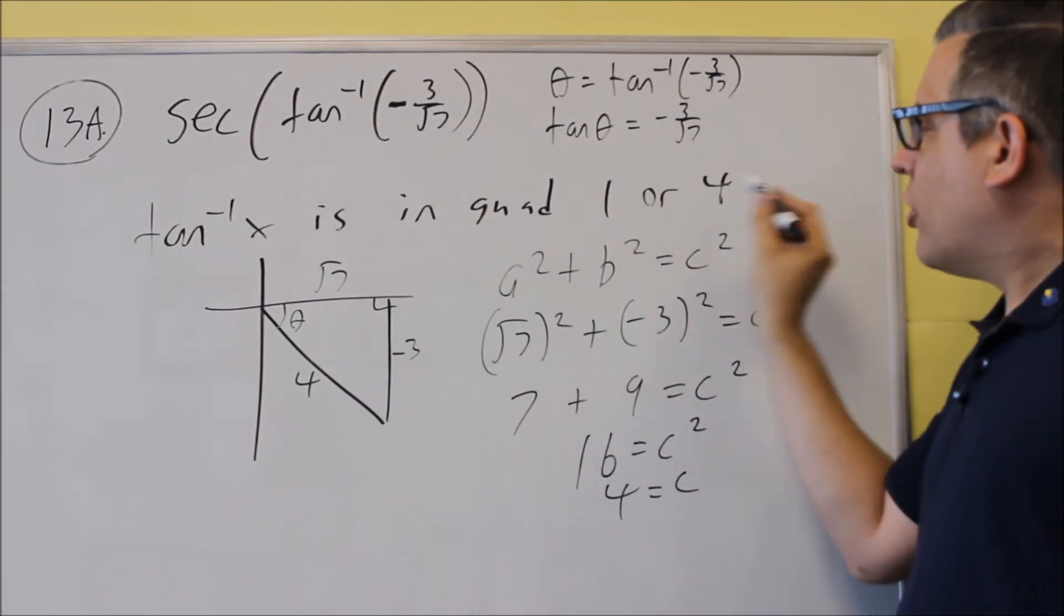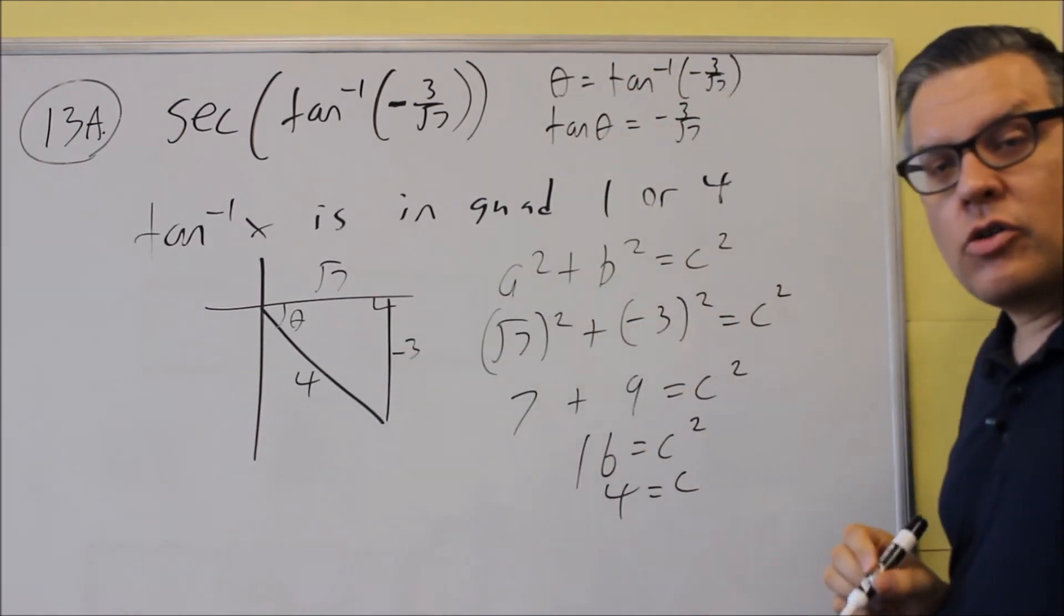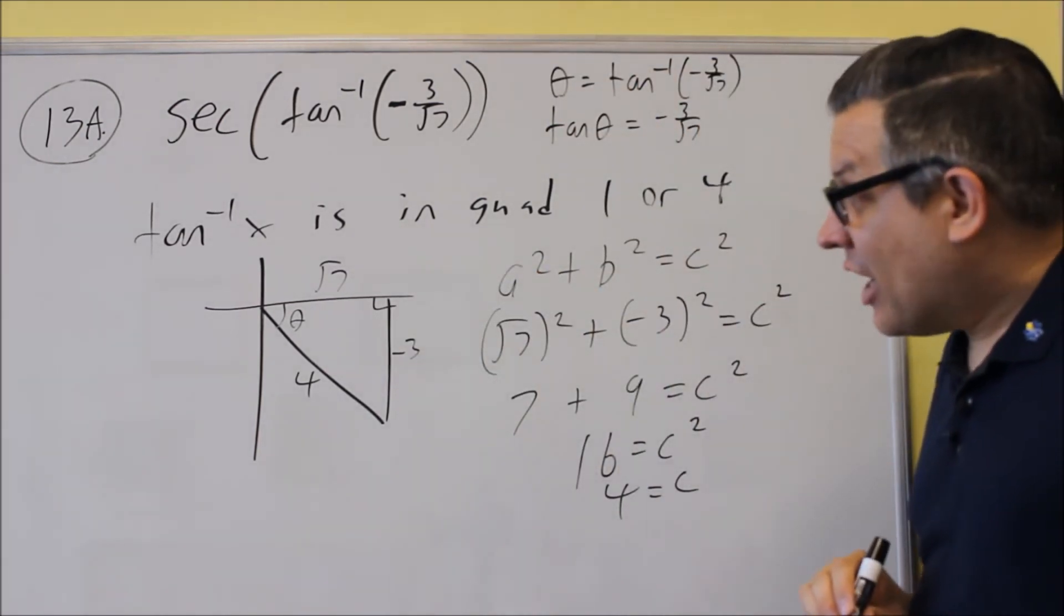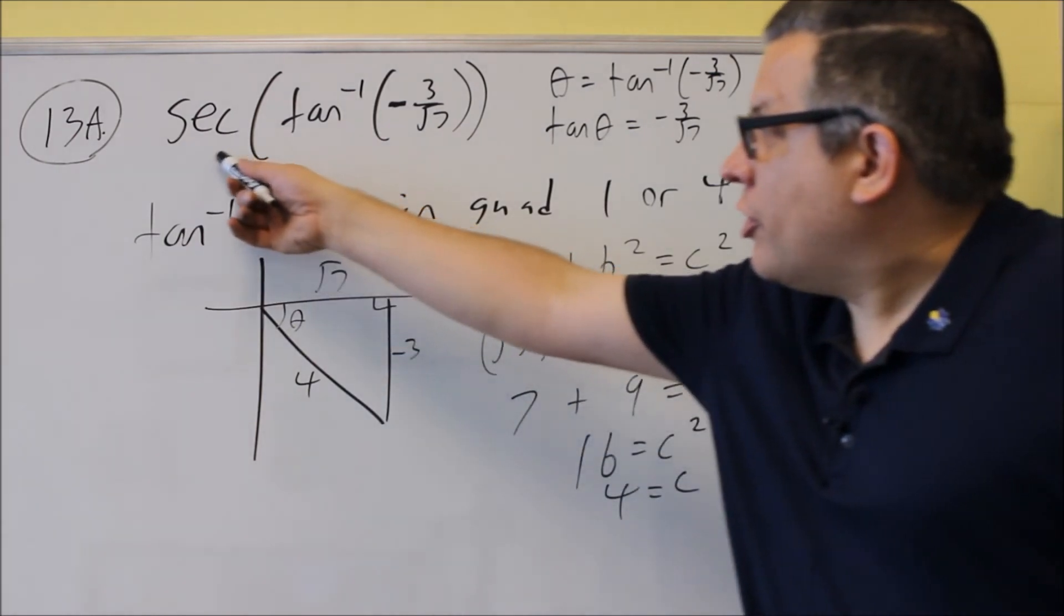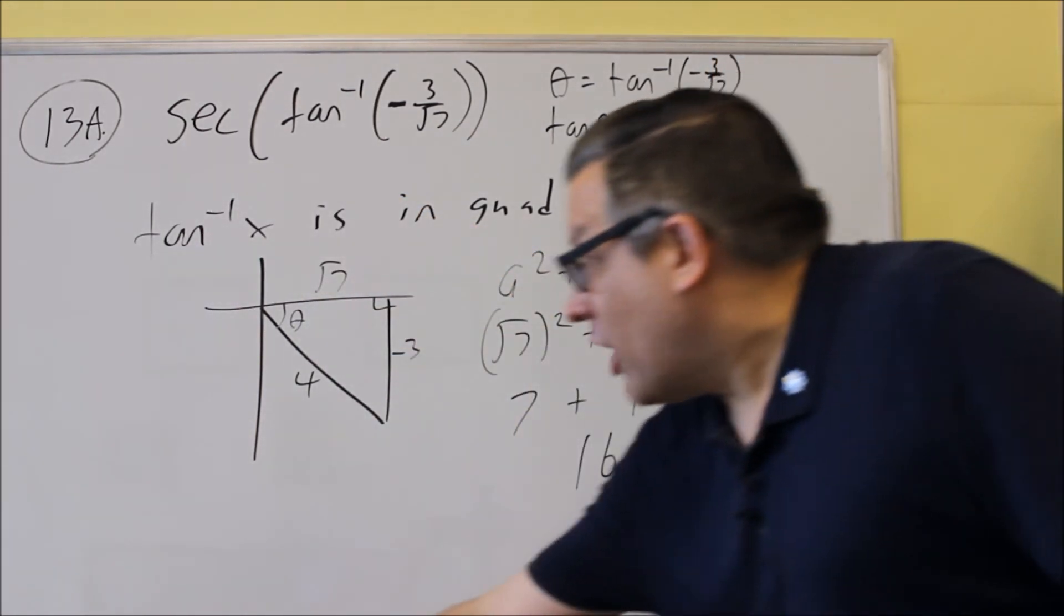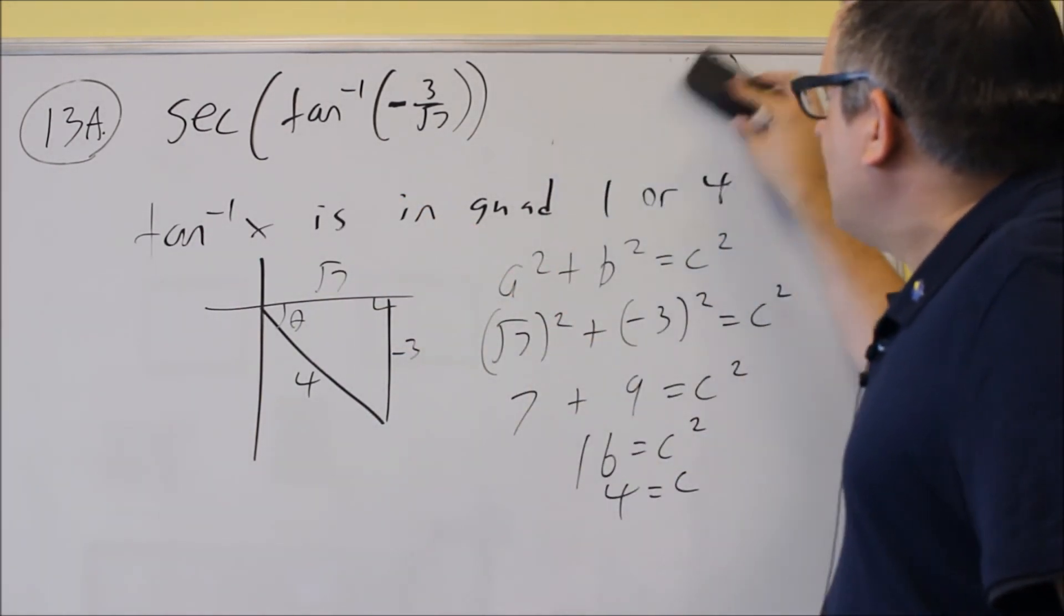Inverse tangent in quadrant 1 or 4, it's negative, so we drew it in the fourth quadrant. We found all the missing sides. The final thing we're going to do is we're going to use secant to actually write the answer.